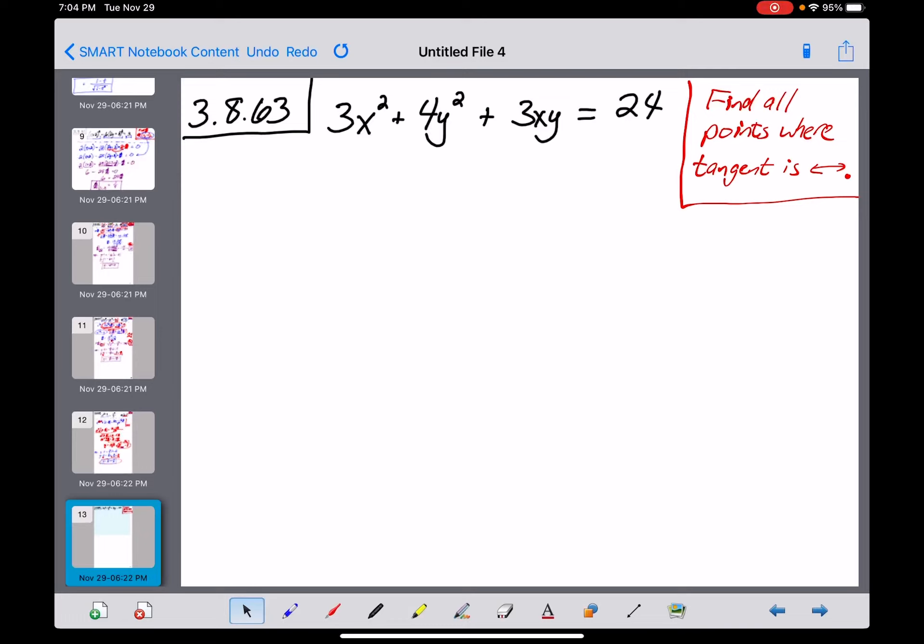Number 63 is a problem that I bet a lot of you looked at and didn't even know where to get started on, just because the directions are unique. It's not like anything else that we've been doing. They give you this weird, implicitly defined equation right here, and they ask you to find all points on the curve where the tangent line is horizontal. It turns out that this particular equation is an ellipse, but not one of the nice ones you've learned to deal with over the last couple years. It's kind of a slanted diagonal ellipse.